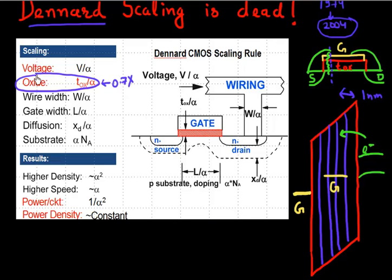So it was no longer possible to scale this oxide thickness, and because of that it was also not possible to scale the voltage. The voltage, instead of scaling 0.7x, just became a constant.